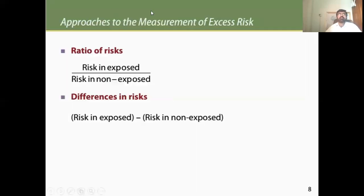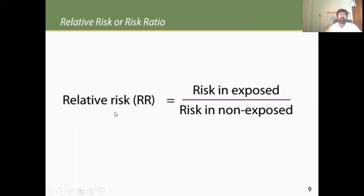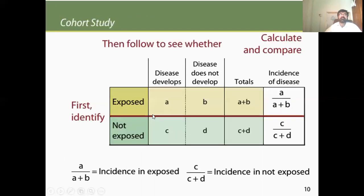Risk is the likelihood that an individual will contract or develop a disease. Approaches to measuring excess risk include: excess risk, which is the ratio of risk; risk difference, which is risk in exposed minus risk in non-exposed; and ratio of risk, which is risk in exposed over risk in non-exposed. When you divide risk in exposed by risk in non-exposed, that becomes relative risk.